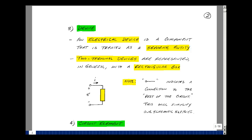Our next definition is that of a device. An electrical device is a component that is treated as a separate entity. Two terminal devices are represented in general by a rectangular box with these wires connected to it. What these mean is that there's something else hooked up here. We're just using this as a shorthand notation.